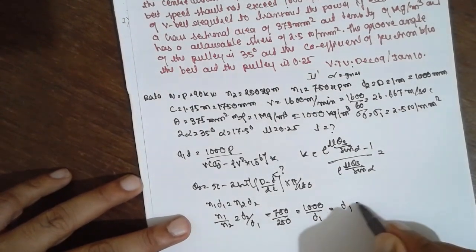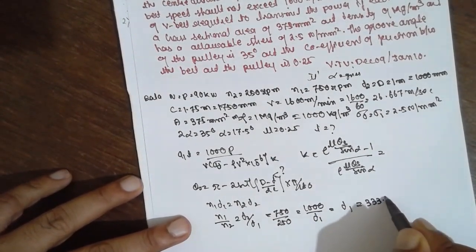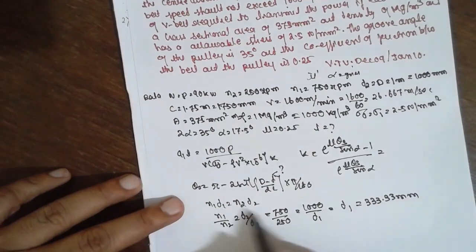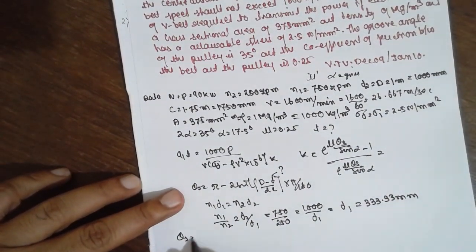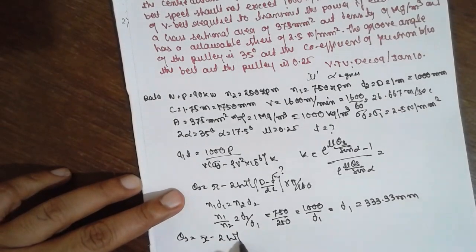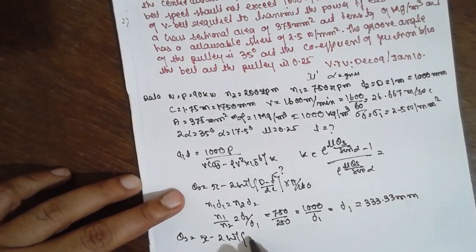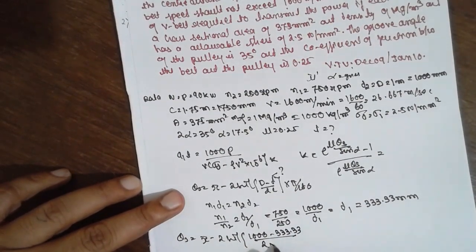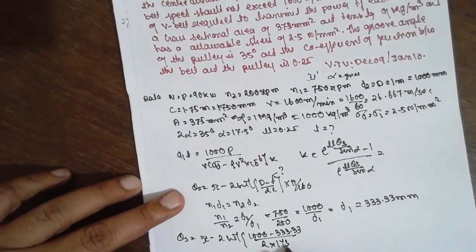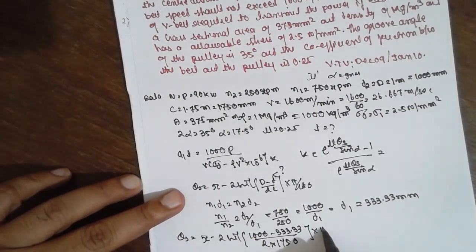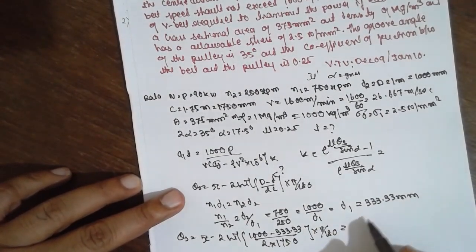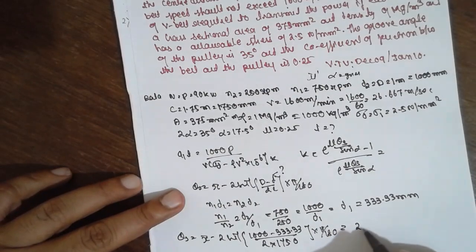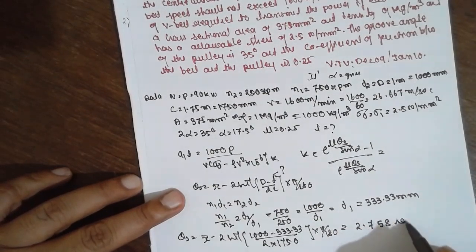D1 is 333.33 mm. Once you get this one I will go for theta s. Theta s is equal to pi minus 2 sine inverse (capital D 1000 minus 333.33 divided by 2 into c, c is 1750) times pi by 180. Here the answer will be 2.758 radian.